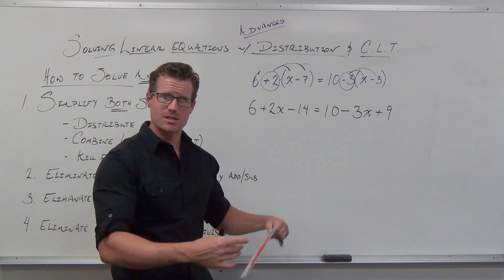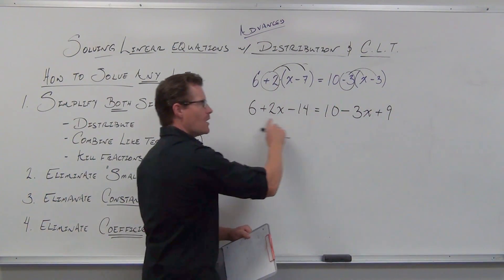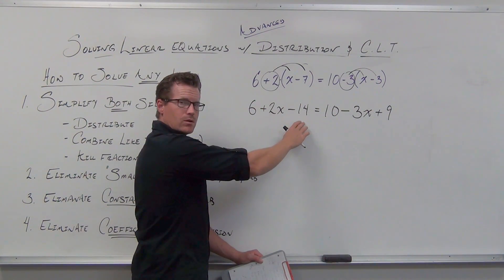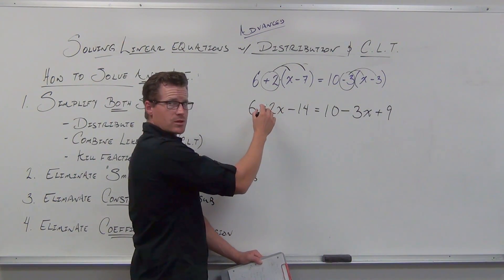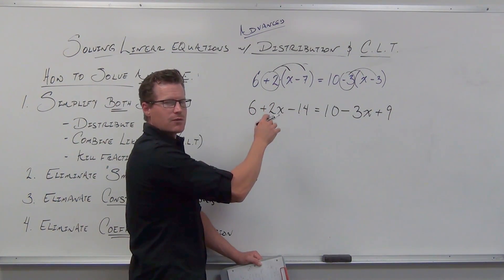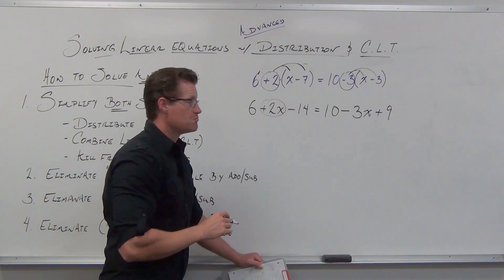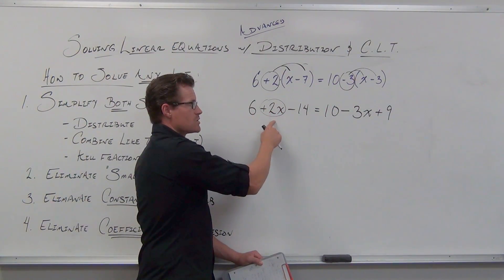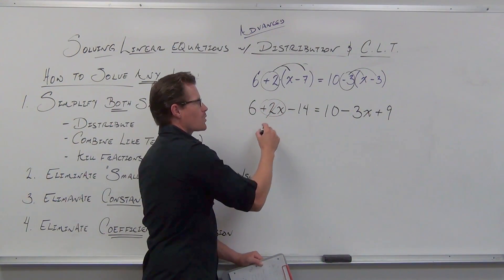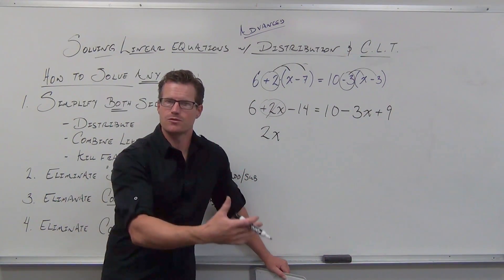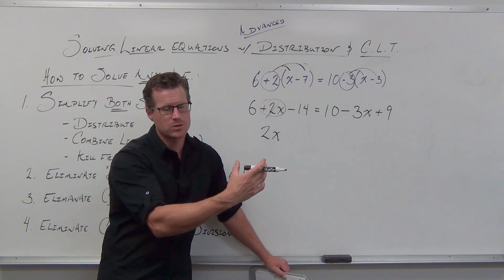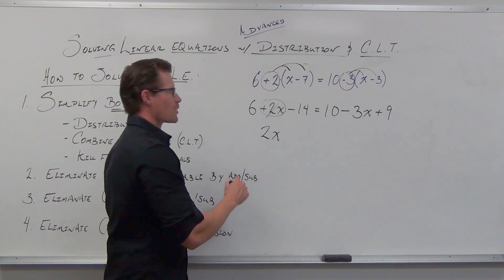Now, keep on going with this. Yeah, we're simplifying. Yeah, we distributed. Now we check for combining like terms. Do you have any? Remember, combining like terms is a side-by-side approach. I'm going to ignore this side for right now. Look right here. Do you have like terms over here? Let's look for our variables first. Do I have like terms with 2x on this side? No. So we're going to cross it out. We're just going to write down 2x.